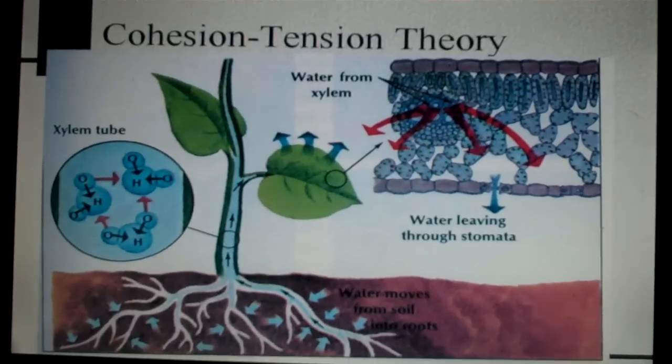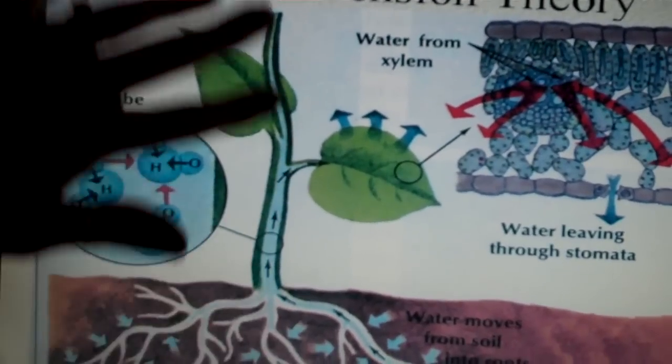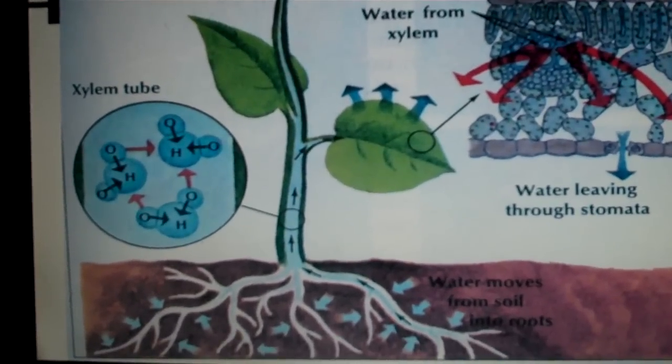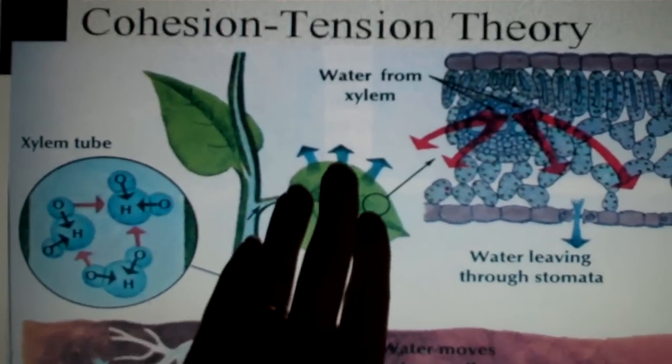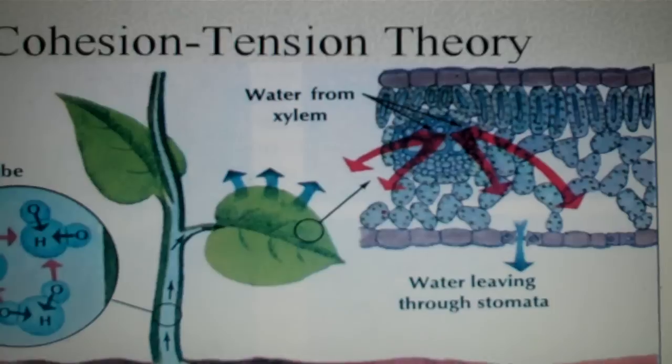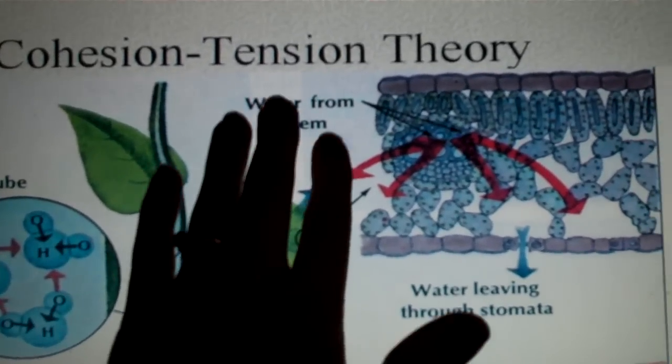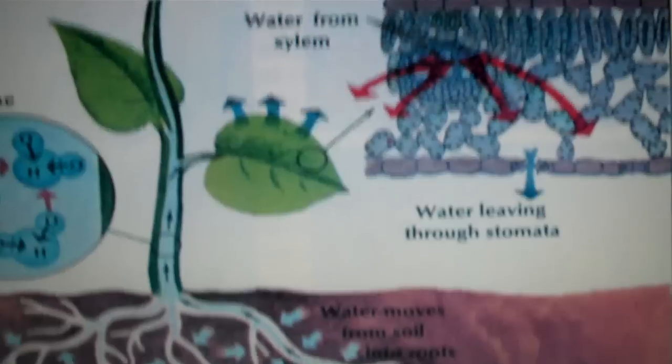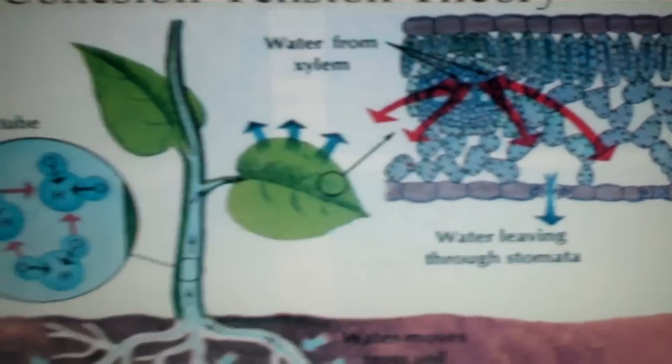The cohesion tension theory is explaining how the water from the roots is going to get moved up to the top of the plant. Because water is so fantastic with its hydrogen bonds, when some water molecules are going to evaporate from the surface of the plant, the hydrogen bonds between them kind of pull the water molecules up. As some water leaves, the water gets pulled this way because of hydrogen bonding. That keeps the flow of water in one direction from the roots to the tips.